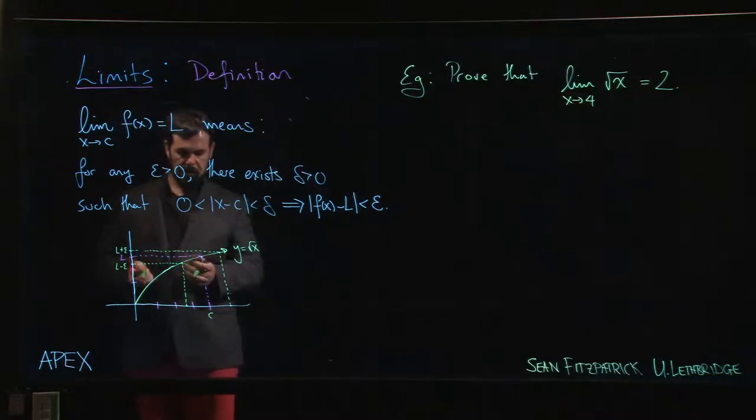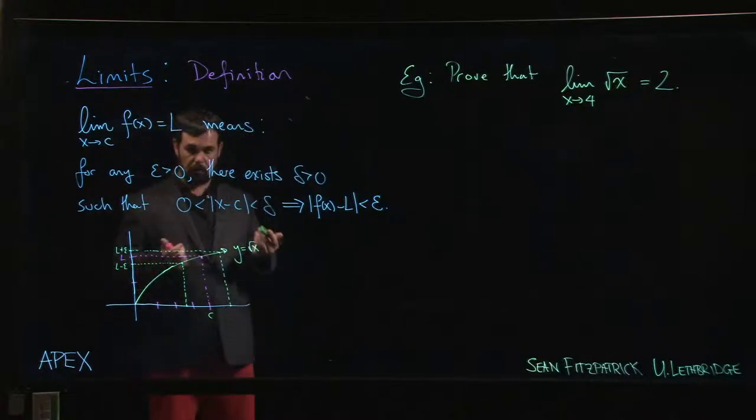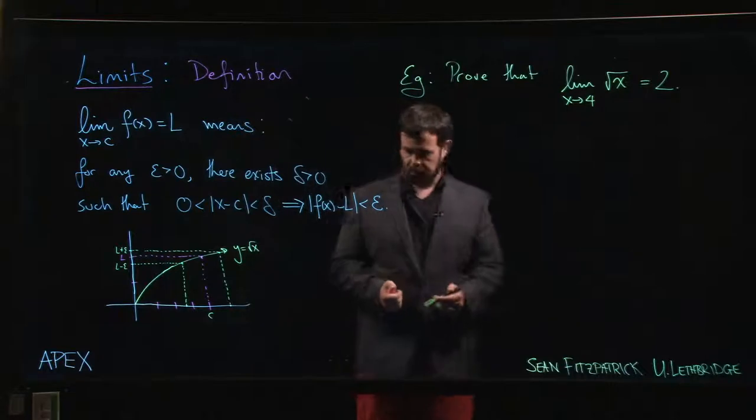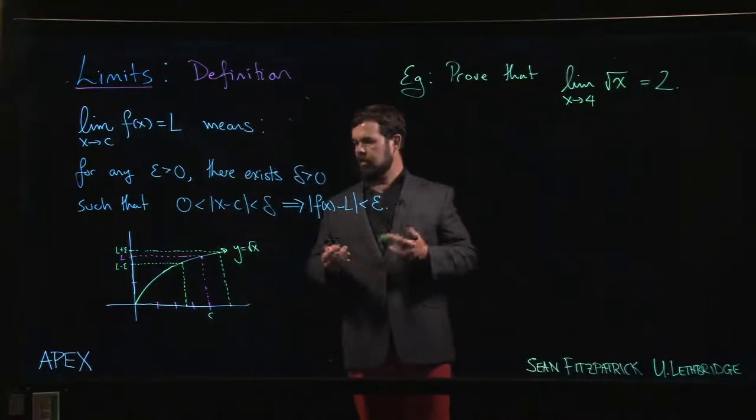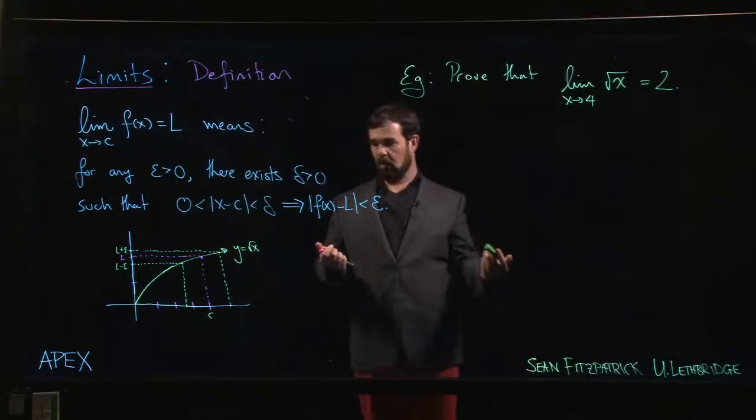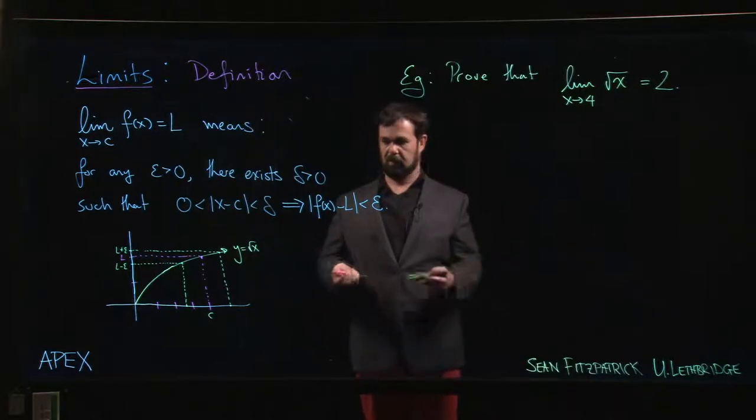When you're trying to come up with your delta, you choose the smaller of the two, so it looks like maybe this side is a little bit smaller. You take your delta to be that and you'll use that to work through the proof. But the trick is that you have to do this algebraically, symbolically, because you can't draw a new picture for every possible value of epsilon.